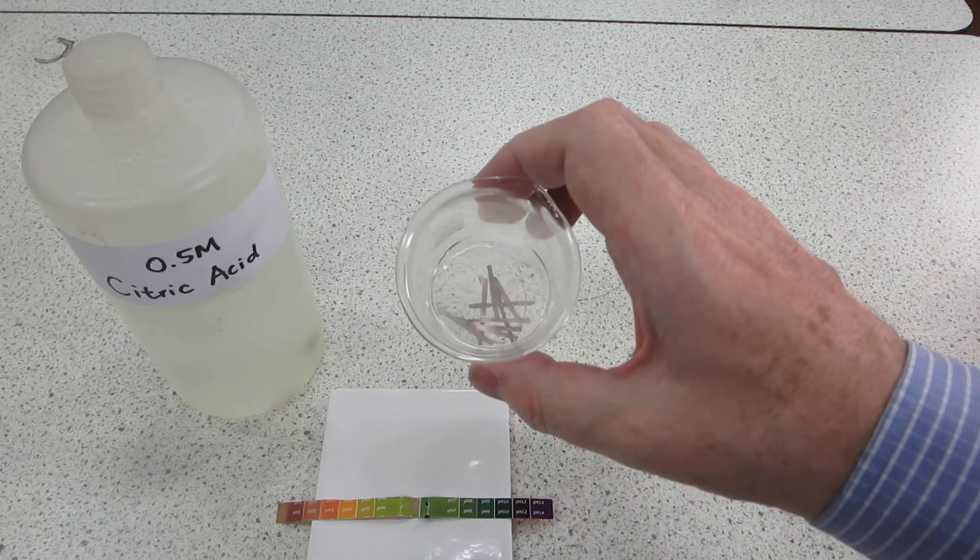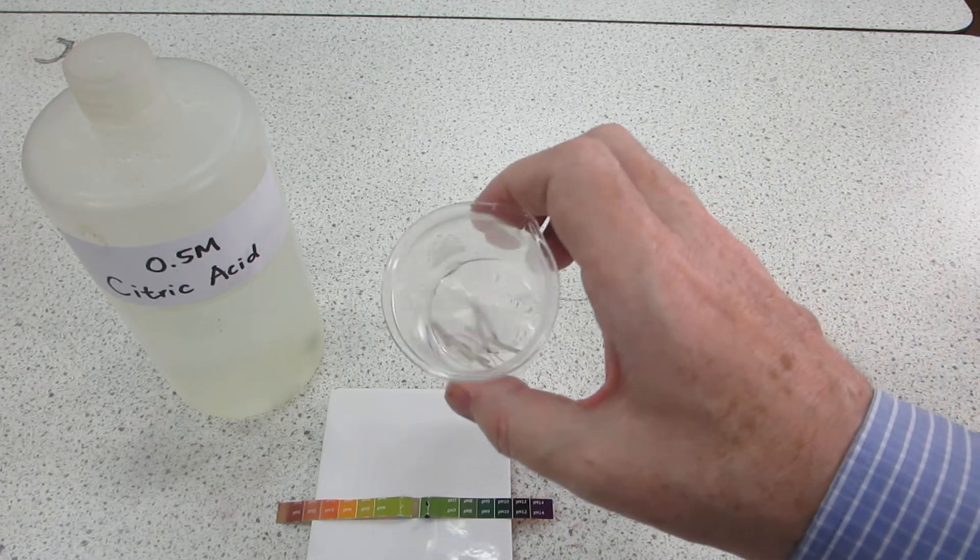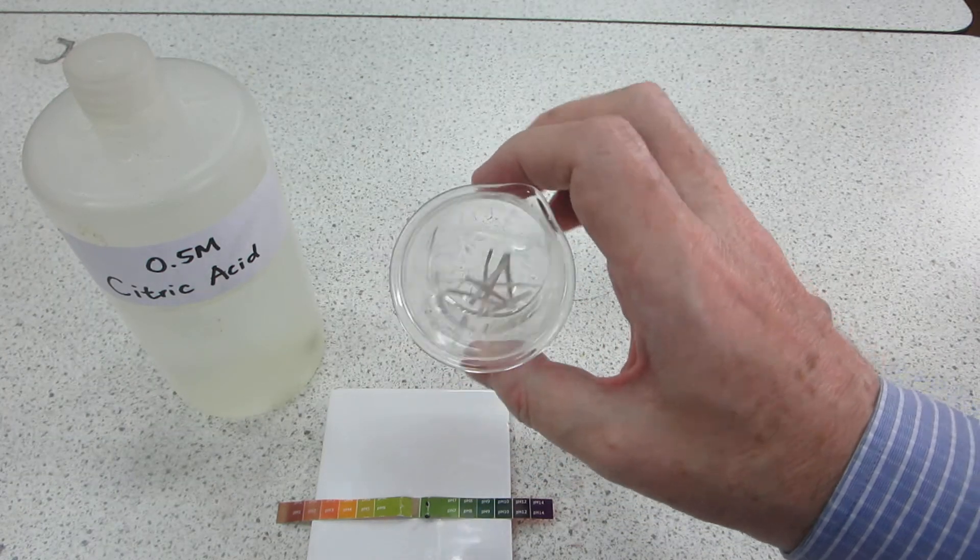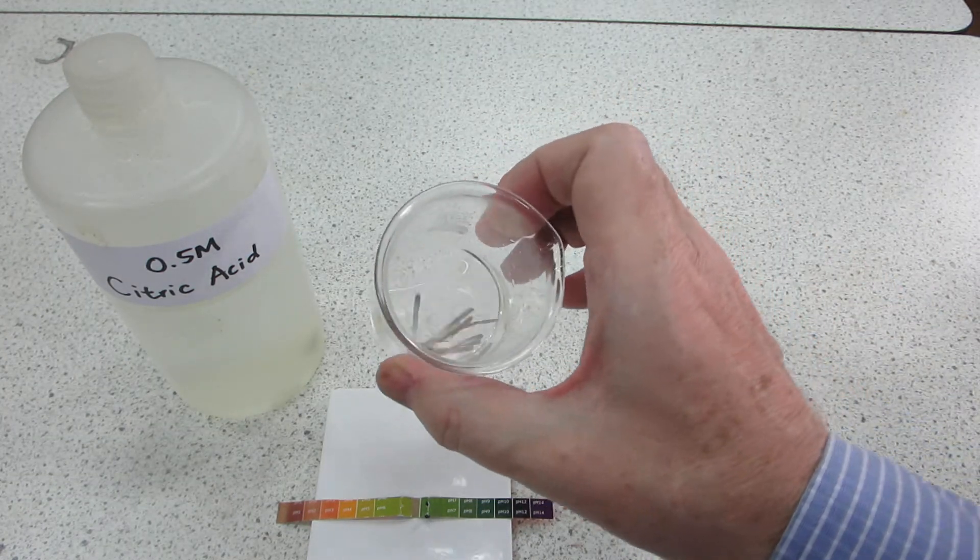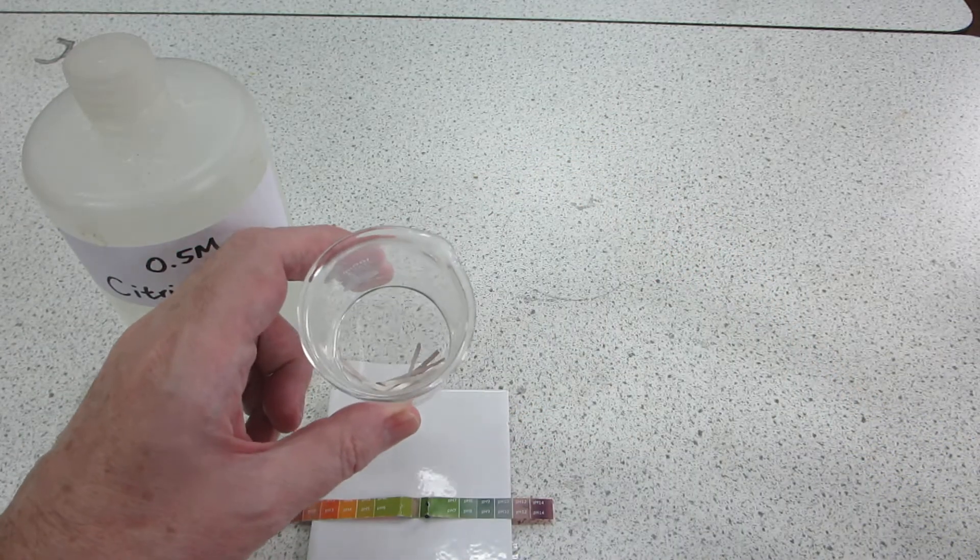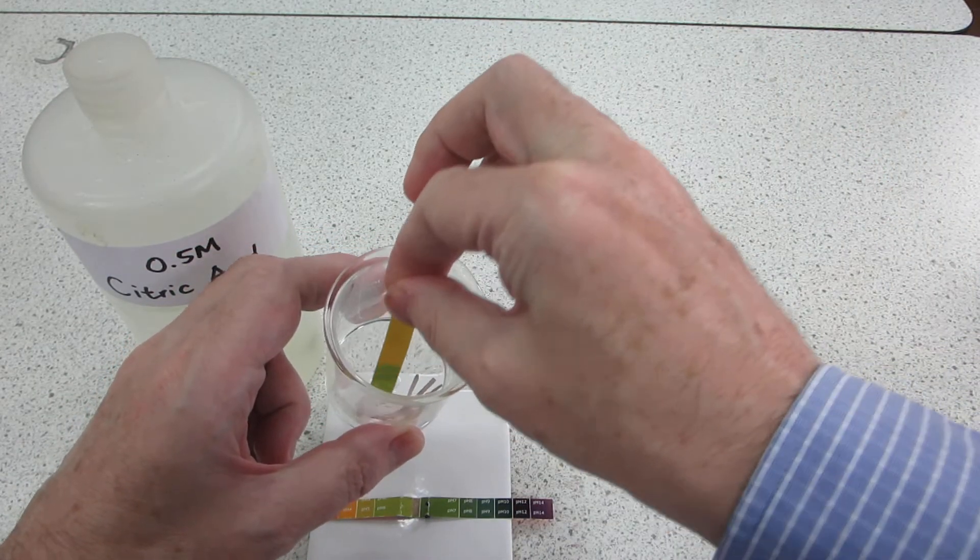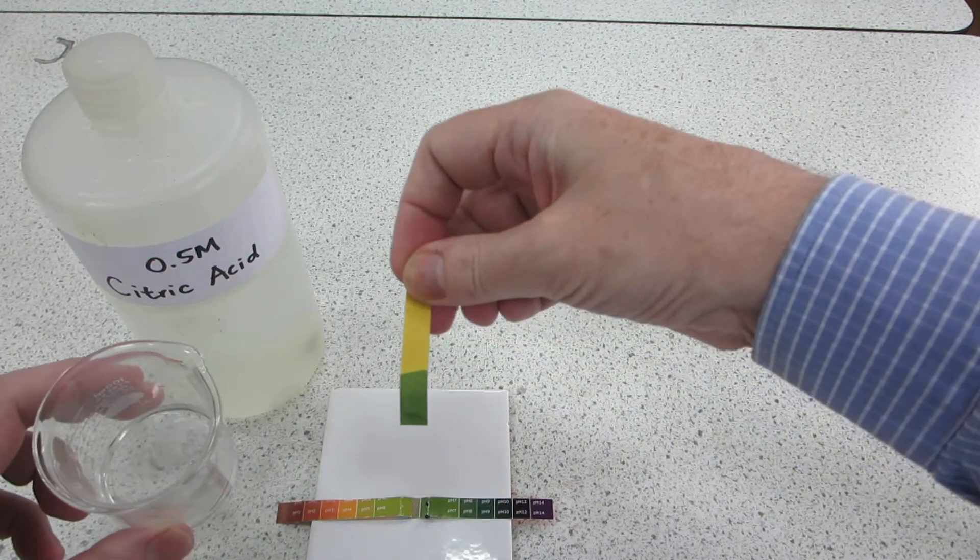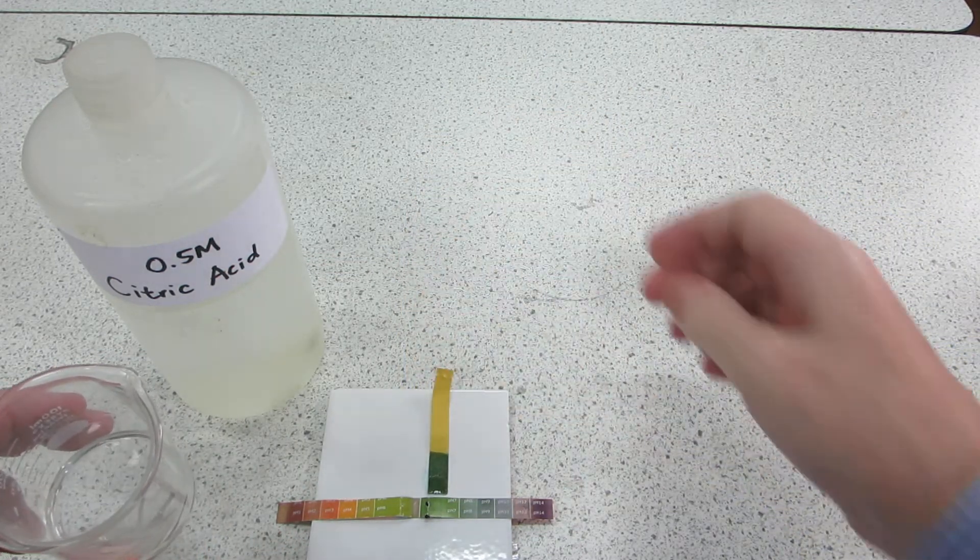After a few hours we can see that the magnesium has reacted with all of the citric acid because there are no longer any bubbles being produced around the metal. We can show that the reaction is over by testing the pH of the mixture and you can see that it's now around pH 7.